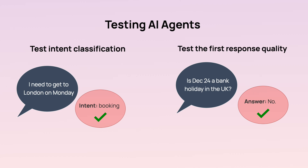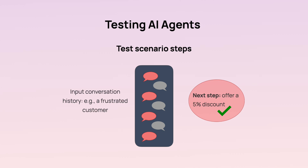Another example is testing first response quality. Even though agents may hold long conversations, it's often still worth testing in a simple input-output manner by going through a question bank and checking against ground truth responses. You can also test single steps in longer conversation scenarios: design tests that check if an agent makes the correct choice given a set scenario, providing prior conversation history and then verifying the next action or response is correct.